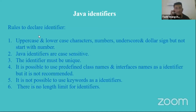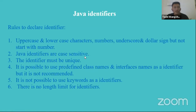Java identifiers are case sensitive. Java programming is a case sensitive language, so uppercase and lowercase letters have different meaning to the compiler. Also, these identifiers must be unique. If you declare a class named 'test' and then declare another class named 'test', the compiler will give an error. So identifiers should be unique — there should be no duplication.